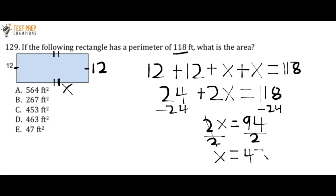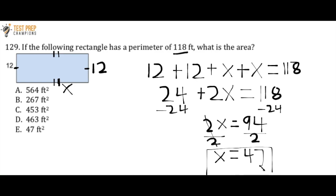So if you made it this far and figured out that X equals 47 and thought E was the right answer — you did something really good by figuring out that X equals 47. But we have to take one more step here. If you got that far, really good job, but we need to go a little bit further. And if you didn't make it this far, hopefully you now understand how I got here.